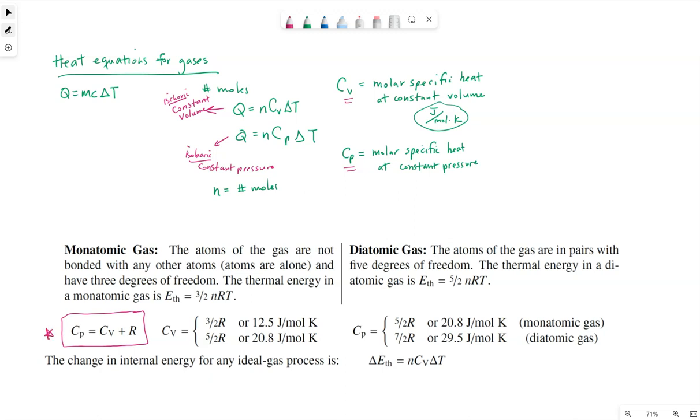They're related in terms of R, meaning the gas constant. So remember R is 8.31, the rounded number that our author is using, joules per mole kelvin. So C P is always a value of R higher than C V. Now these values are constant depending upon the type of the gas.